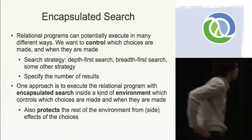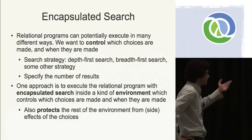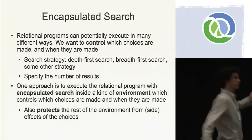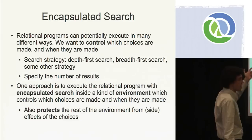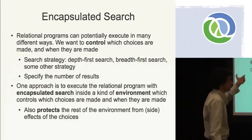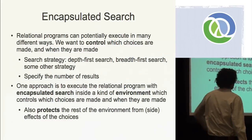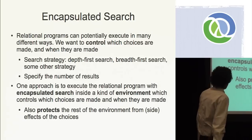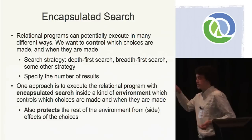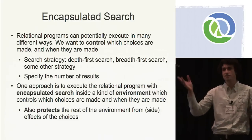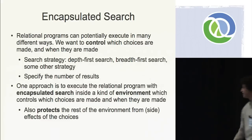One way to approach an implementation that does this is with encapsulated search. Relational programs — meaning logic programs consisting of purely relations — can potentially execute in many different ways, and we want to be able to control which choices are made and when. One way is controlling the search strategy: we saw depth-first search, and you can think of other strategies like breadth-first search, plus others that are particularly useful in logic languages. You also want to be able to control the number of results, because the less-than relation generates the infinite set of numbers — unless you can put a cap on that, it's fairly useless.